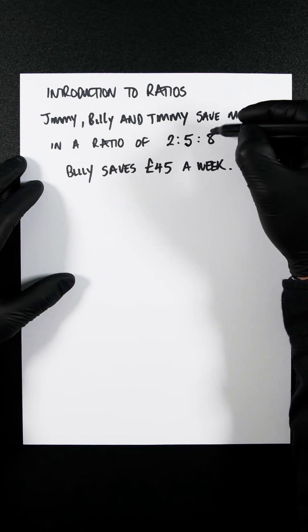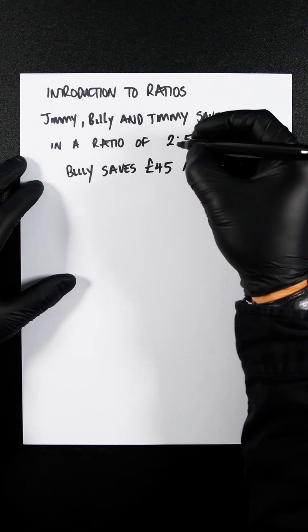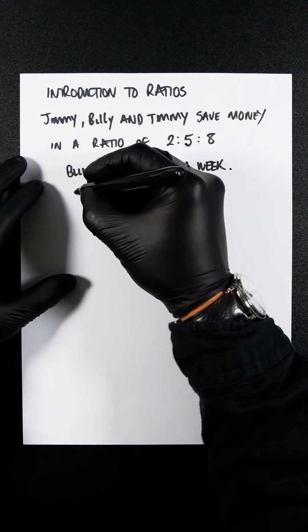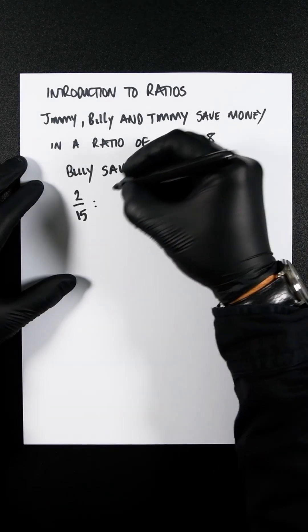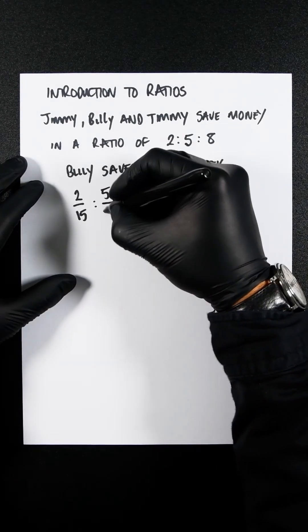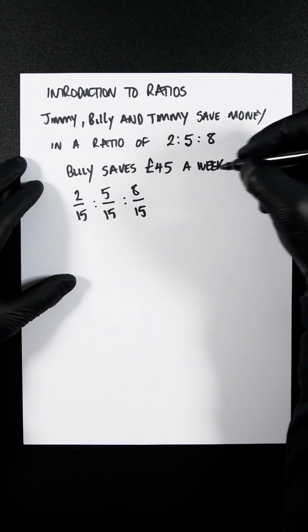So the first thing that you'll do is add these all up so you see how many parts there are. So then if we represent this as a fraction, Jimmy will be 2 over 15, Billy will be 5 over 15 and Timmy is 8 over 15.